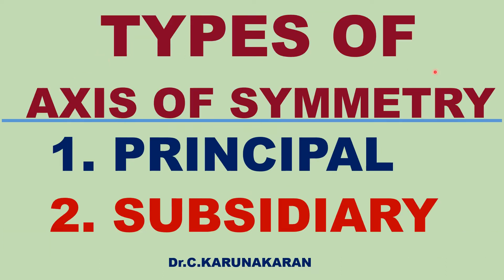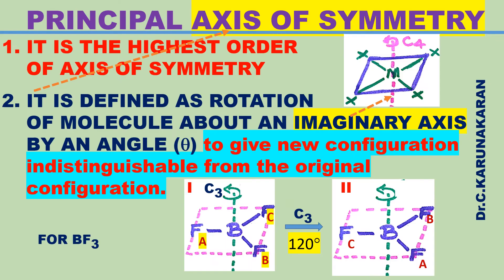There are two types of axis of rotation: one, principal axis of rotation; two, subsidiary axis of rotation. Principal axis of symmetry is the highest order of axis of symmetry. In a square planar molecule, C4 is the highest order of axis of symmetry. In BF3 molecule, C3 is the highest order of axis of symmetry.